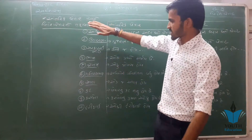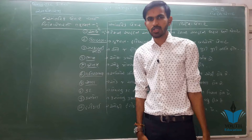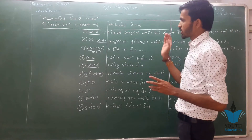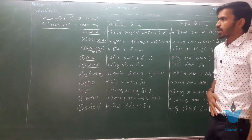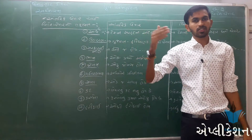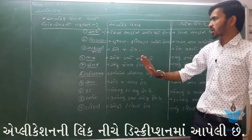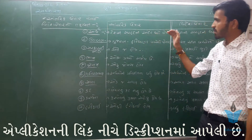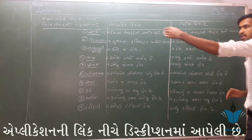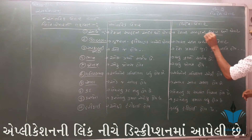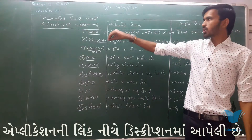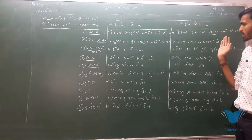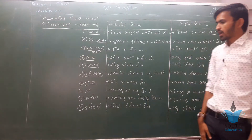સરળ દસ મુદ્દા છે જે આપણે તારવી શકીએ અને સરળ રીતે યાદ રાખી શકીએ. બાકી ઘણા વધારે મુદ્દા પણ લખી શકાય. આંત્રિક વેપાર - જ્યારે વ્યવહાર એક જ દેશની સામે થાય, અને વિદેશ વેપાર - જ્યારે અન્ય દેશ સાથે વ્યવહાર થાય.